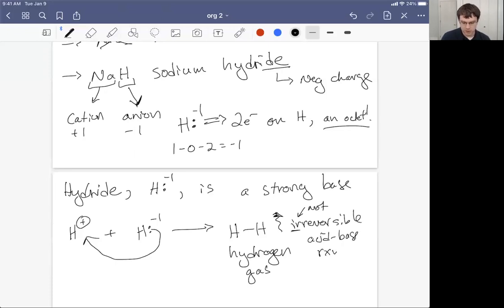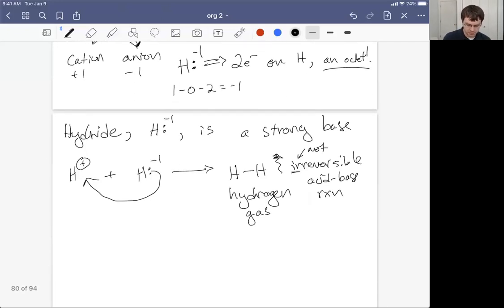For it to go backwards, the hydrogen gas that just boiled away would have to go back down into solution and then be acidic enough to give back a hydrogen, which is difficult to do because there's no difference in electronegativity between the two hydrogen atoms. What this means is we can use sodium hydride as our base to make our alkoxide, which is step one of the Williamson ether synthesis.